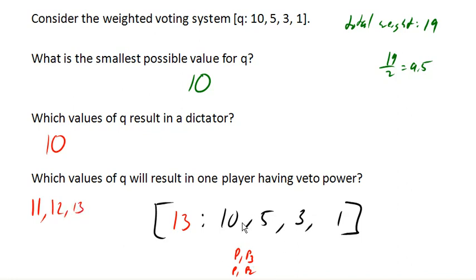How about at 14? At 14 now, we could either win with player 1 and player 2, or with player 1, player 3, and player 4 altogether. But at this point, still, player 1 is the only essential person who has to be in the coalition for it to win.